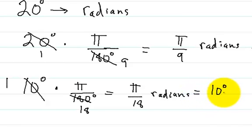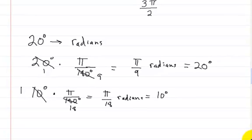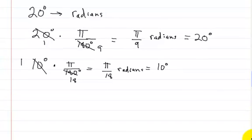So that's how we convert that. Now if we want to go the opposite direction, you just do the exact same thing but in reverse. So let's say we have 3 over 2 pi.